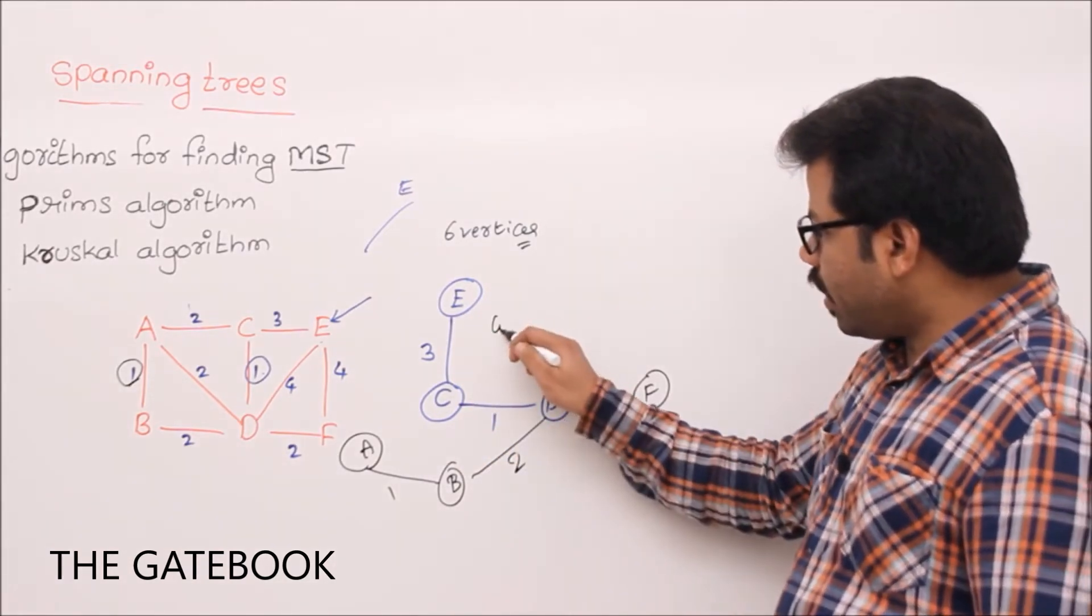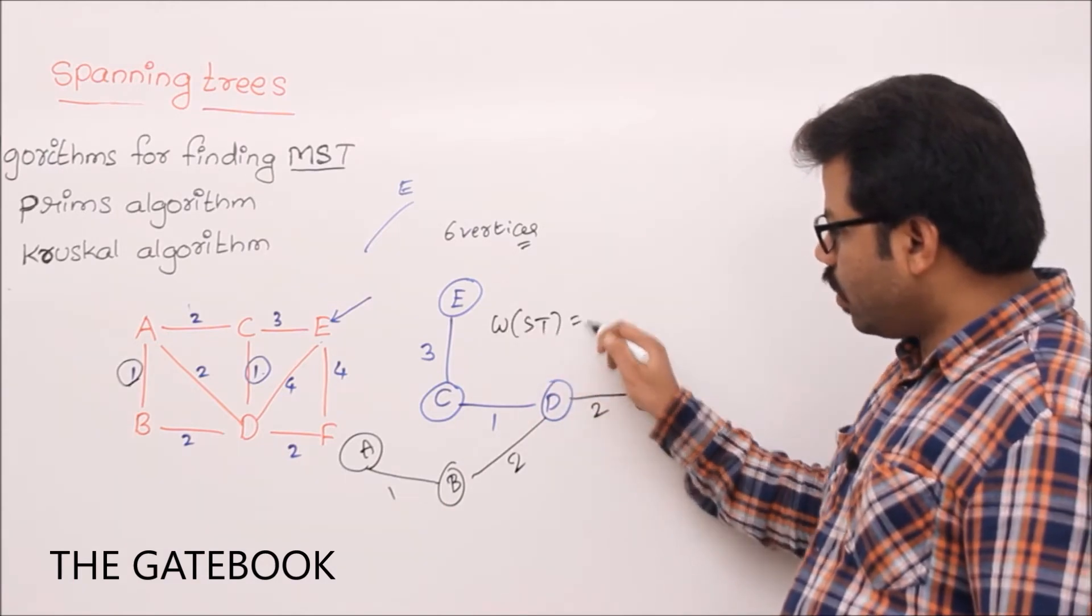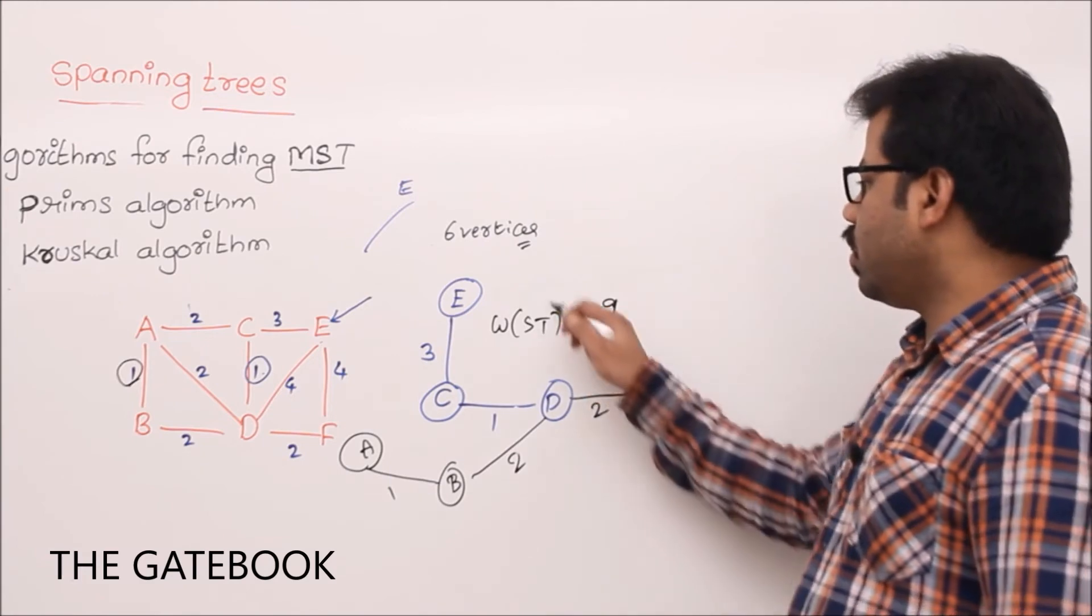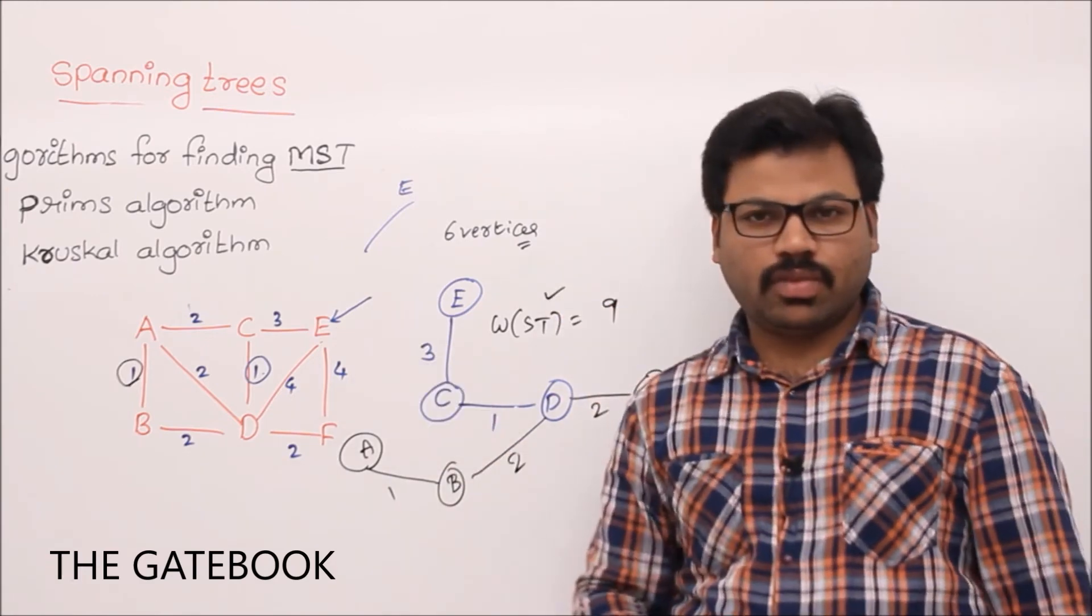Now, what is the weight of the spanning tree? Weight of the spanning tree in this one? 1 plus 2, 3, 5, 6, 9, right? So, this is about Prim's algorithm.